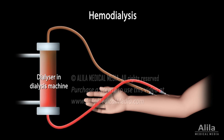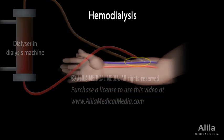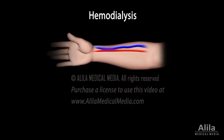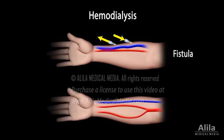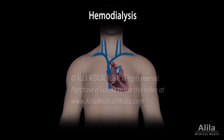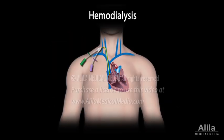To prepare for regular hemodialysis treatments, a one-time minor surgery is performed to create a vascular access, which is essentially a large and strong vein enough to sustain the high flow rate through the machine. This can be accomplished by fusing an artery to a vein, forming a so-called fistula, or by adding a synthetic tube, a graft. For emergency treatment, a catheter can be used for temporary access.